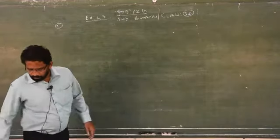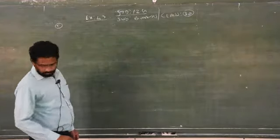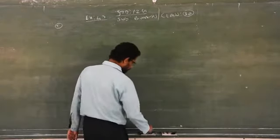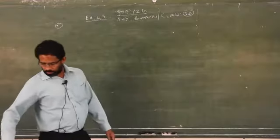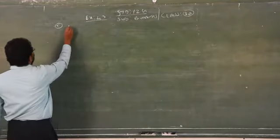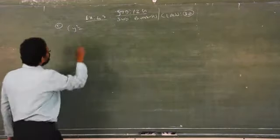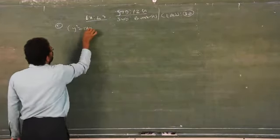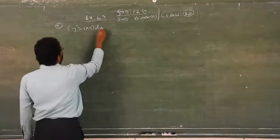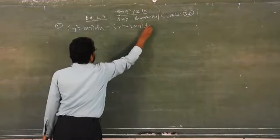Good morning, boys. We will continue exercise number 4.3, sum number 5. Yesterday I gave the last part alone as homework for you to complete. If there is any doubt, please call me over the phone. The equation given is: y² minus 2xy dx is equal to x² minus 2xy dy.